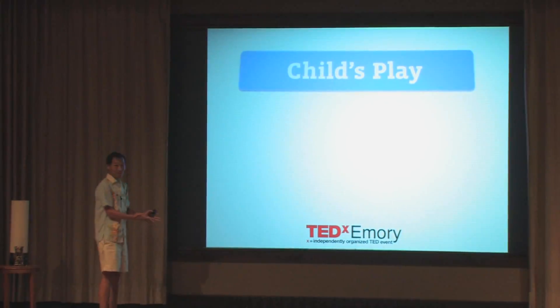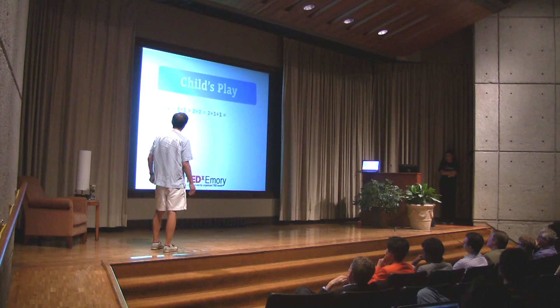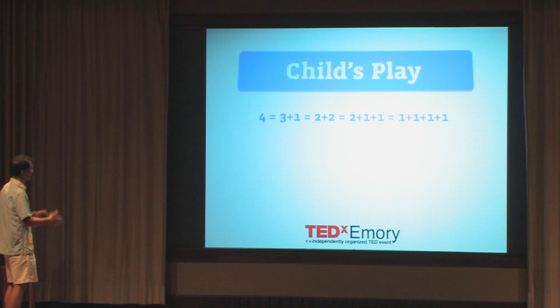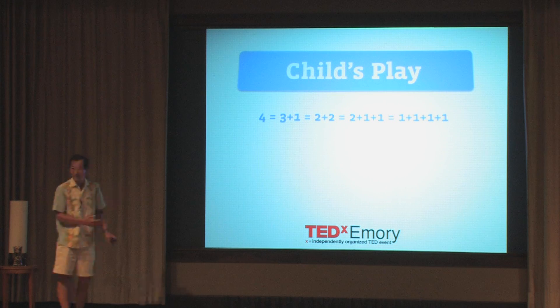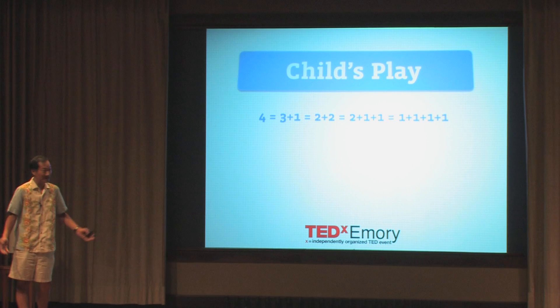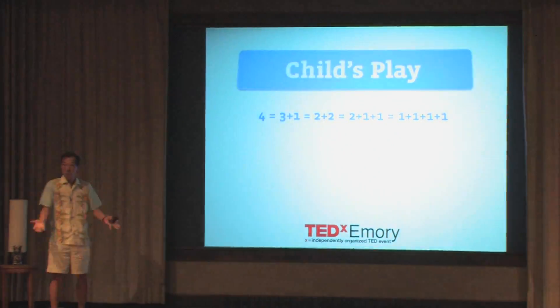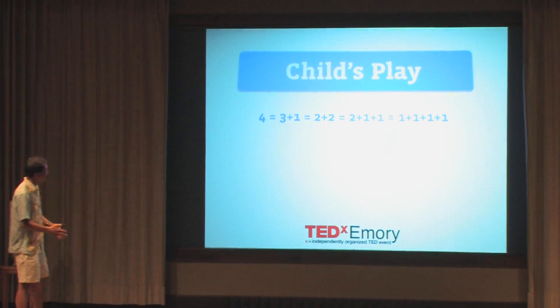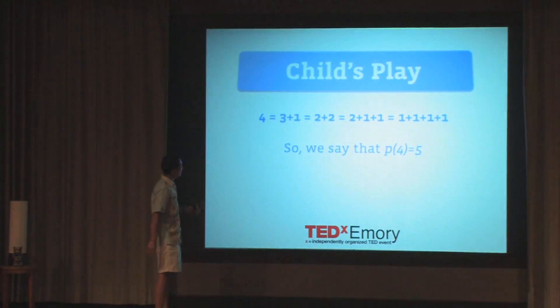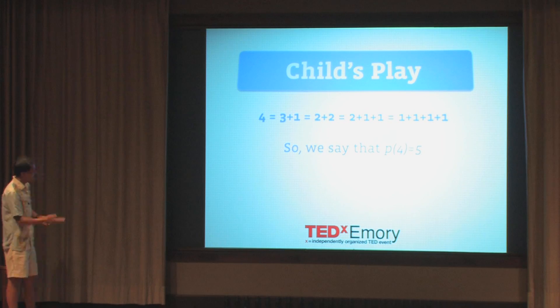What I'm going to describe starts out seeming like little more than child's play. Looking at what you see on the screen: four is indeed three plus one, which equals two plus two, which equals two plus one plus one, which equals four ones added together. If you count the number of ways in which we added up numbers to get the number four — there are five of them. So I'm going to denote that by saying P of four is five. There are five ways of adding up numbers to get four, never mind the reorderings.